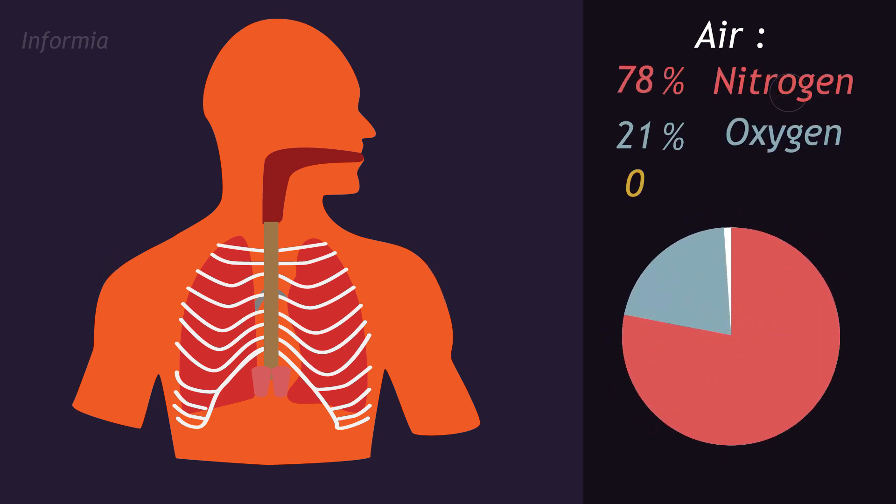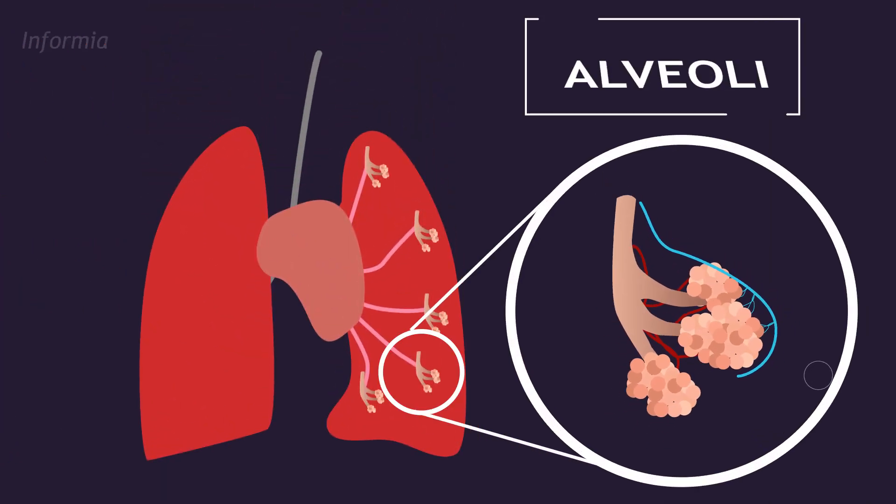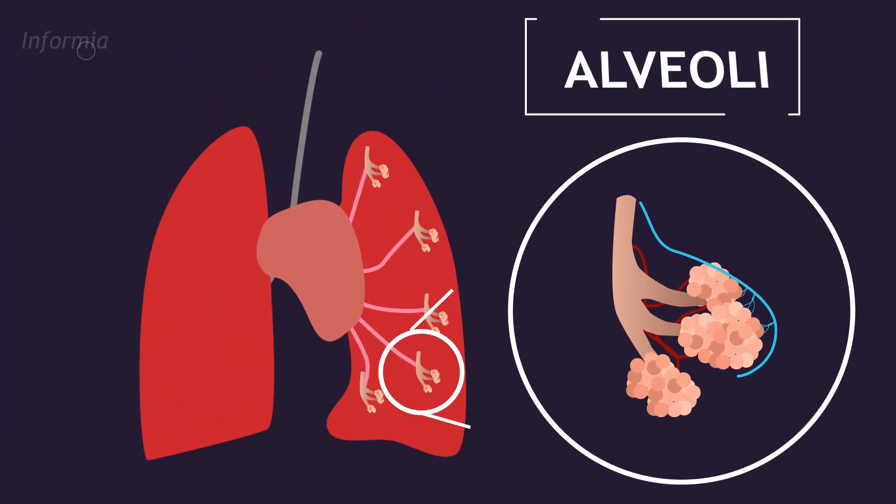But when the air reaches the tiny air sacs in the lungs, called the alveoli, rapid gaseous exchange occurs.